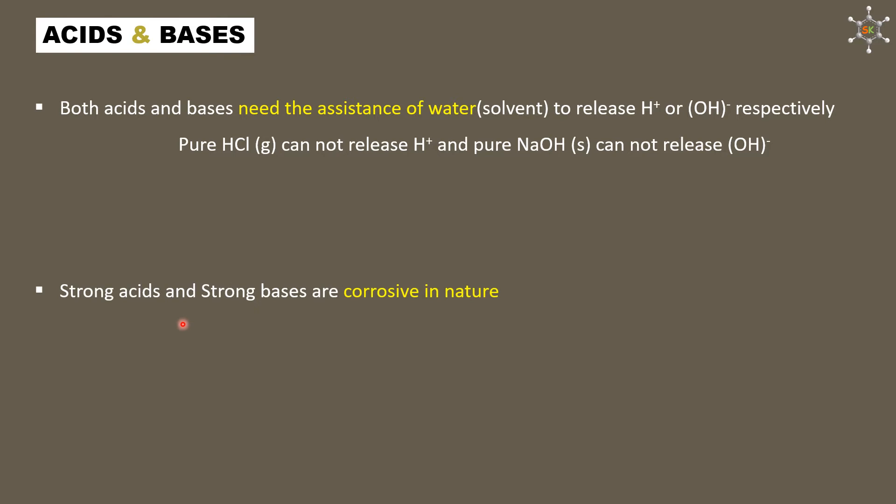Strong acids and strong bases are corrosive in nature. Corrosive means destroying another substance by means of a chemical reaction. Both strong acid and strong base are capable of doing this.